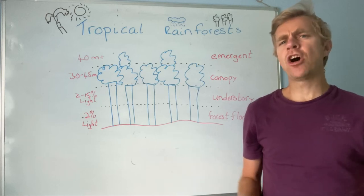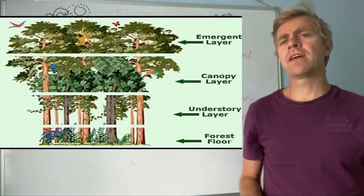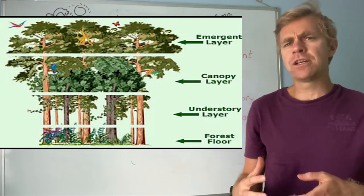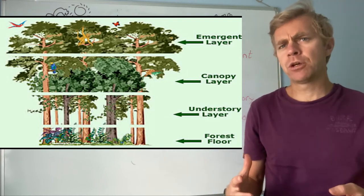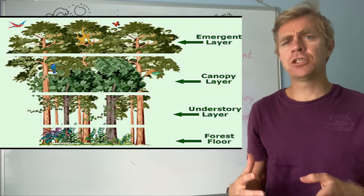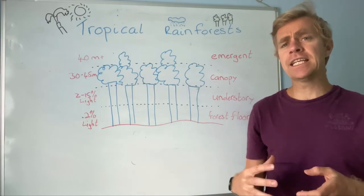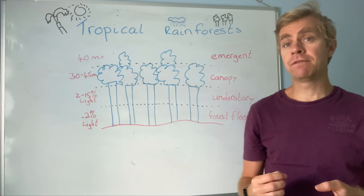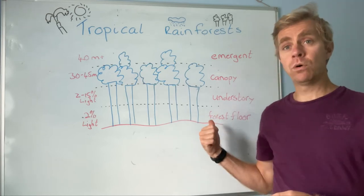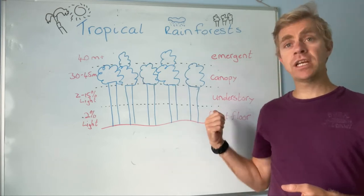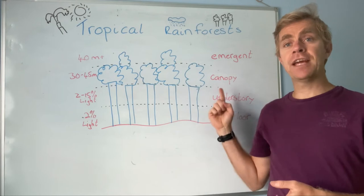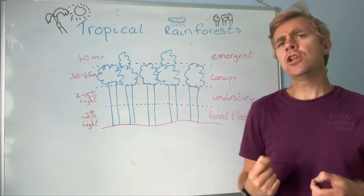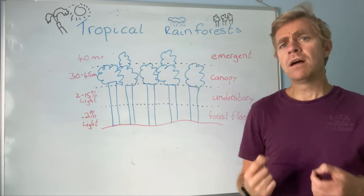The next thing we're going to look at are the layers that make a rainforest. We've already looked at where we find a rainforest and why a rainforest is so important. So the next thing is the different layers of a rainforest. There are four main parts: the forest floor, the understory, the canopy, and at the very top, the emergent layer. Let's look at them all one at a time.